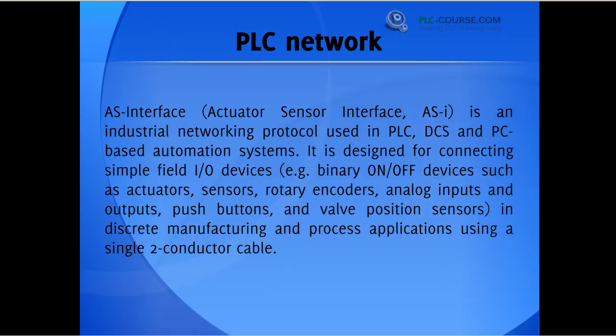For those of you who don't know what an ASI link is, the full name is Actuator Sensor Interface. This is an industrial networking protocol used in PLC, DCS, and PC-based automation systems. It is designed for connecting simple field input/output devices in discrete manufacturing and process applications using a single two-conductor cable.